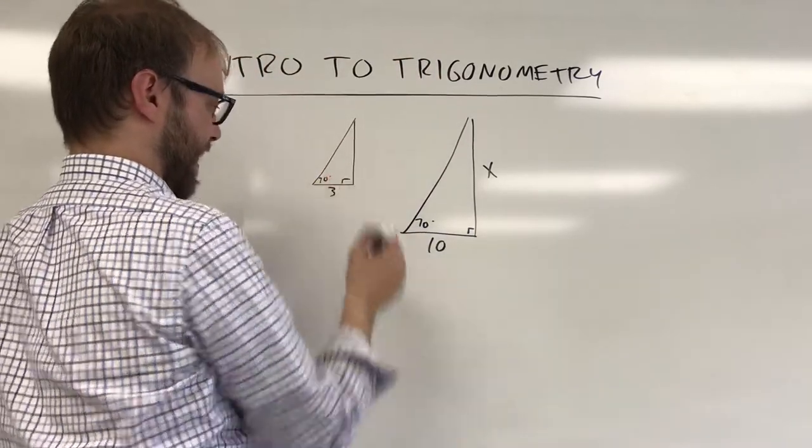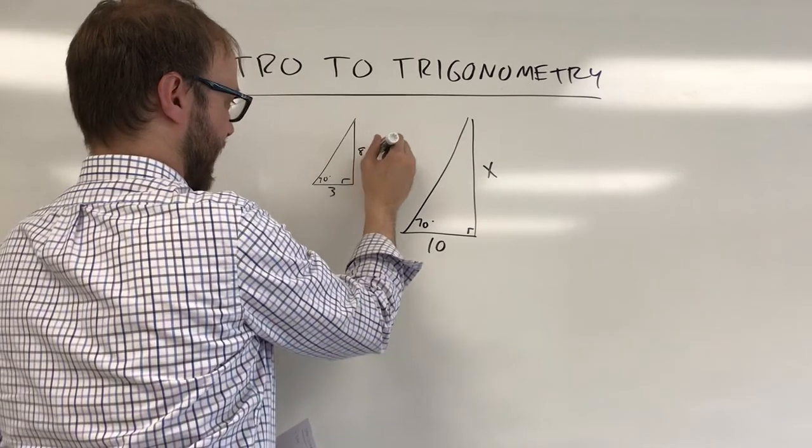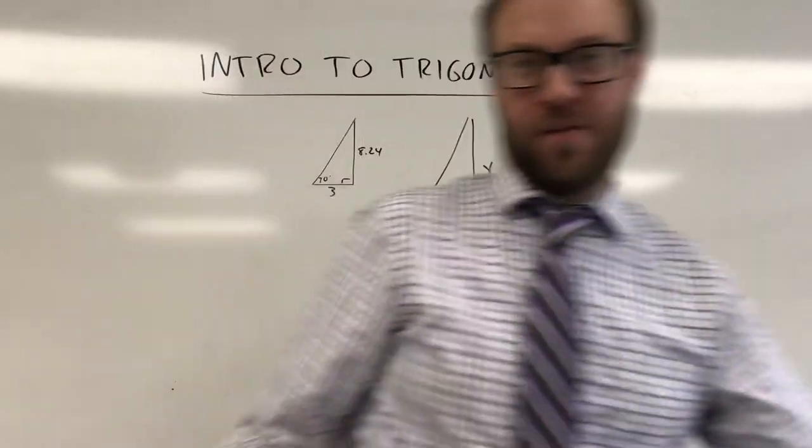I made a little right triangle on paper that had a 70 degree angle, and this side length ended up being 3. And I measured this side length, and it was about 8.24 inches long.